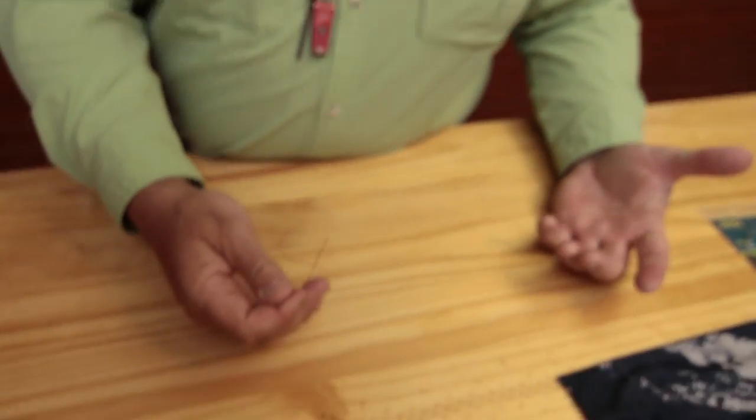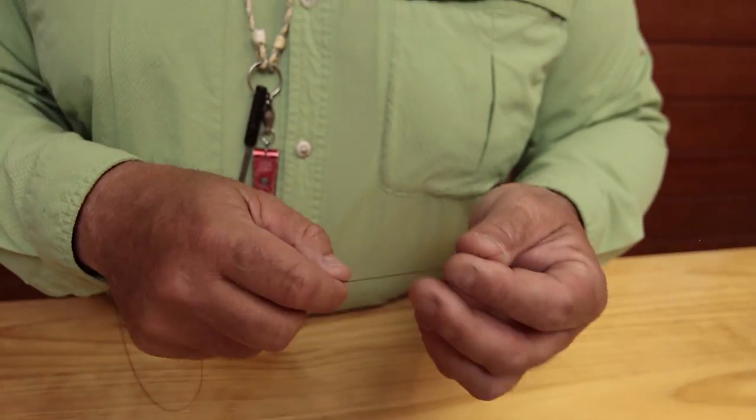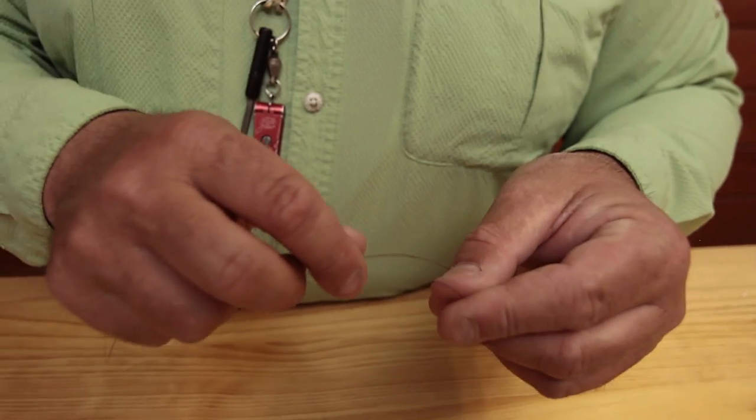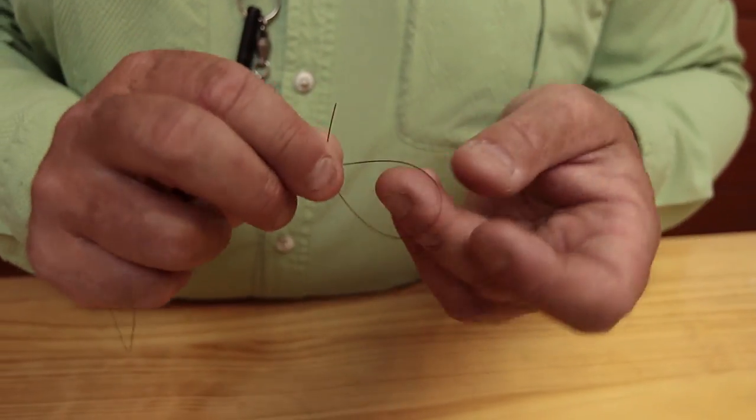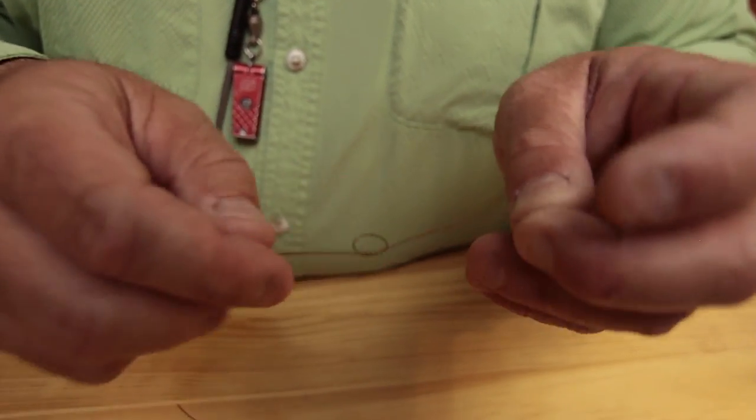Now to attach the fly, I always use a loop knot. Always. When I'm smallmouth fishing, musky fishing, pike fishing, I always use a loop knot. It gives the fly that much more action. So basically what we're doing, we're tying an overhand knot into the tippet.